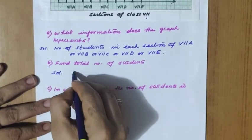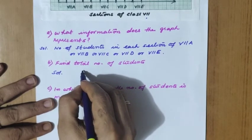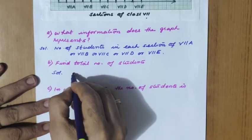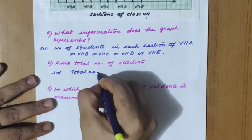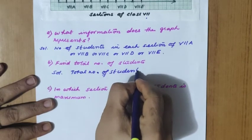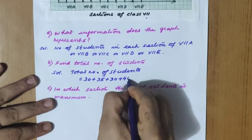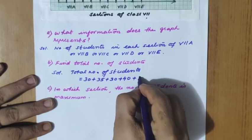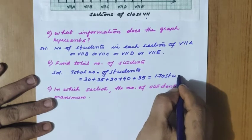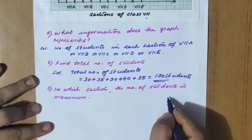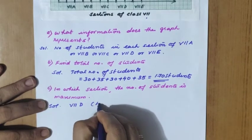Find the total number of students. We read the height of each bar: A = 30, B = 35, C = 30, D = 40, E = 35. Total = 30 + 35 + 30 + 40 + 35 = 170 students. The section with the maximum number of students is 7th D with 40 students.